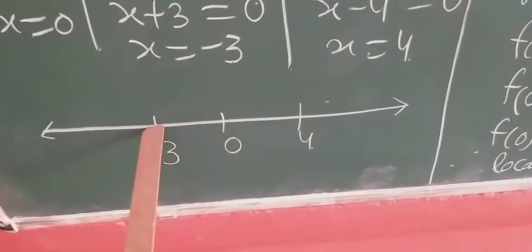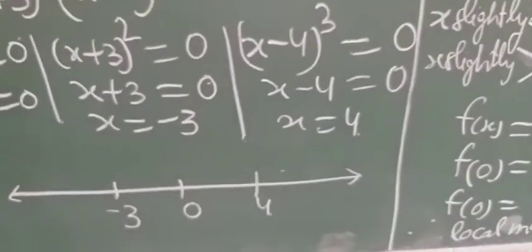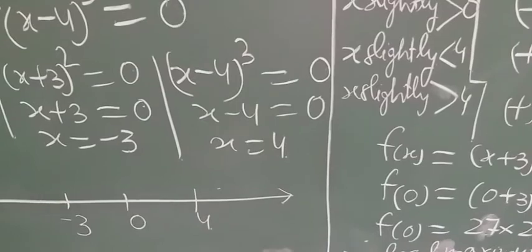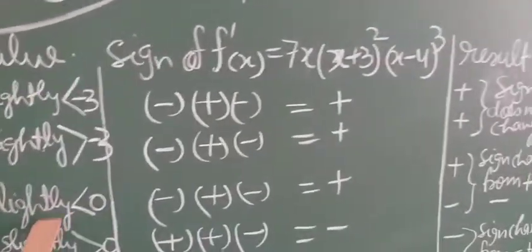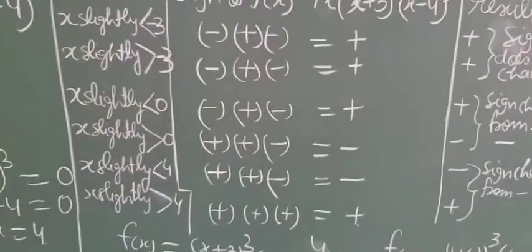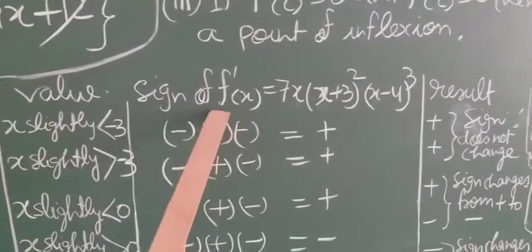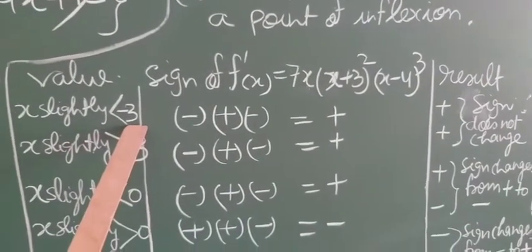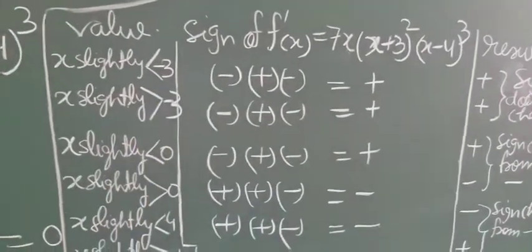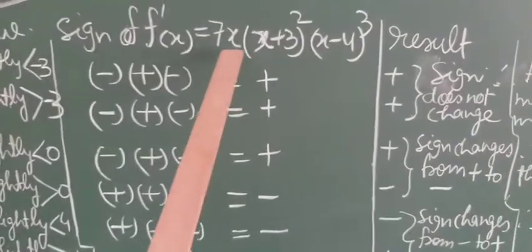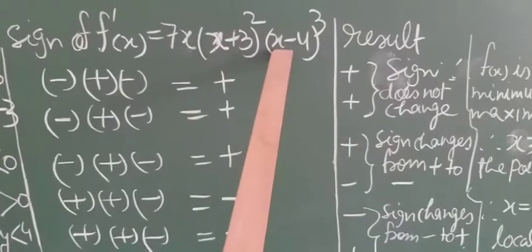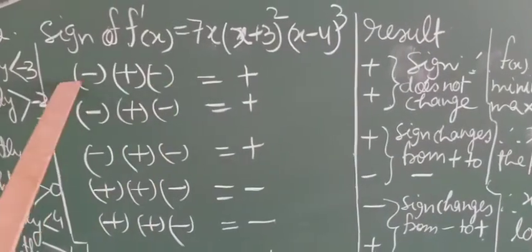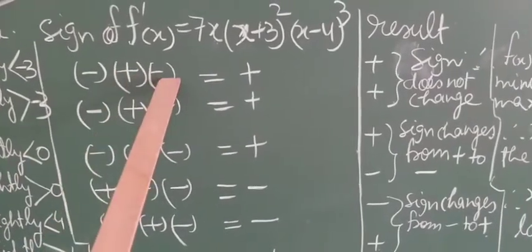Now we have to check at every point whether it is a maxima or minima. We check the sign of f'(x). For x = −3, we put a value slightly less than −3, say −3.1. In 7x it is negative, in (x+3)² it is positive (square is always positive), and in (x−4)³ it is negative. So overall: negative × positive × negative = positive.